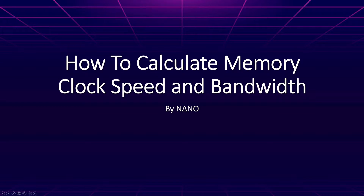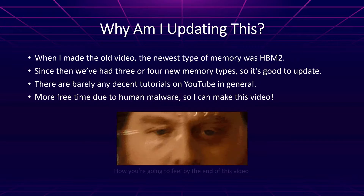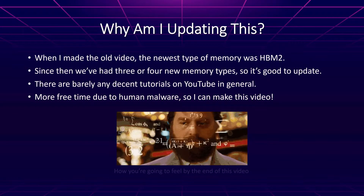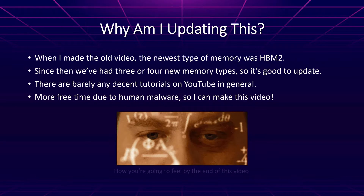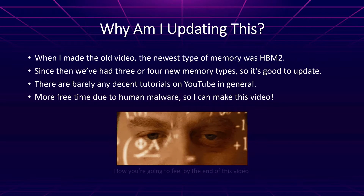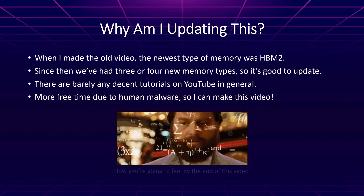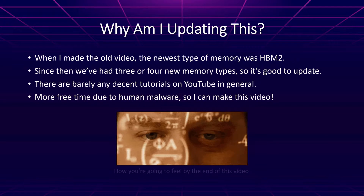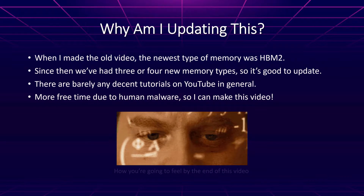Welcome back to another nano video. Today we're going to be looking at how to calculate memory bandwidth and memory clock speed. I've made a previous video on this and I ended up thinking maybe it's time to make a new video and update the tutorial I made in the past. There are several reasons for this — we've had four new types of memory come out, such as GDDR6, GDDR6X, HBM2E, etc. So I think because of that it's a good time to make an updated tutorial.